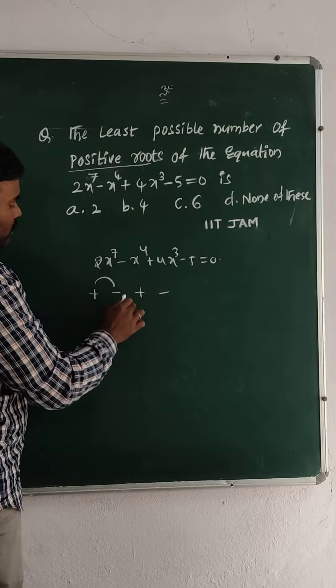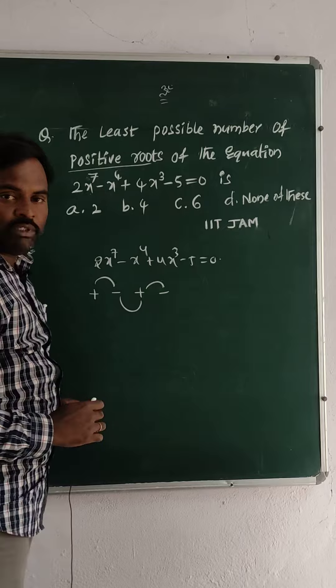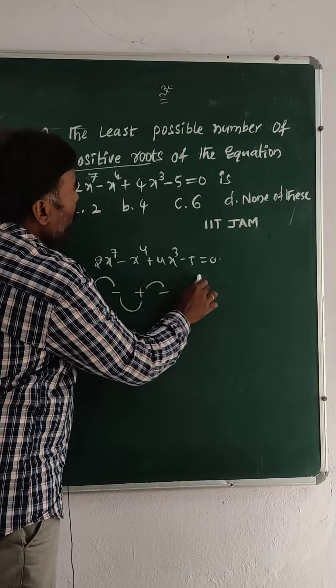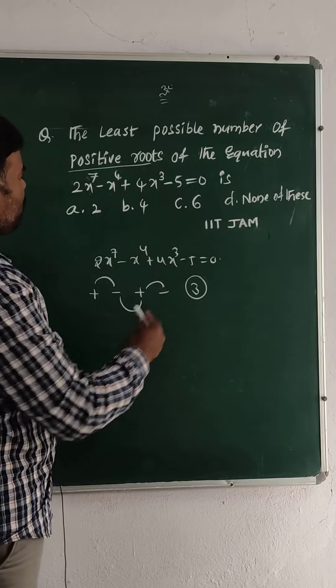How many times it was changed? 1, 2, 3. So 3 times it was changed. So the number of positive roots are 3.